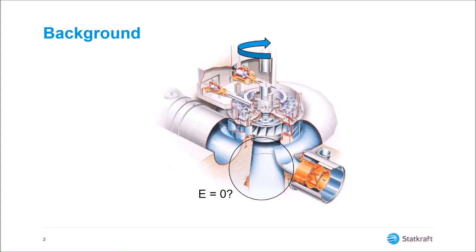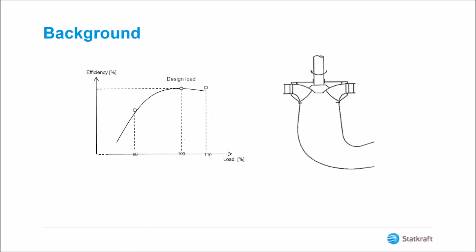This is however only in theory. At the design load, the efficiency is at its peak. That means that the turbine will extract almost all the energy from the water. This results in a smooth flow through the draft tube.